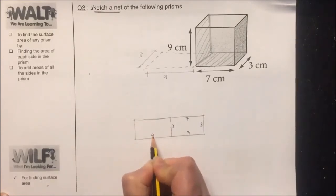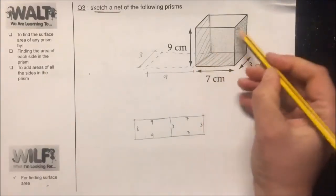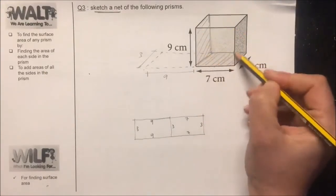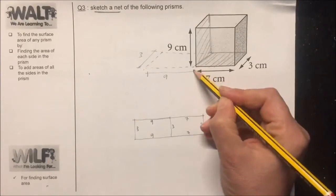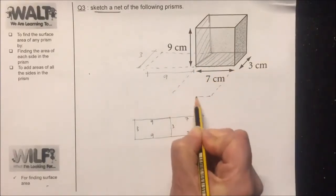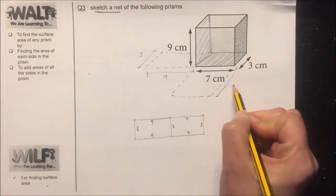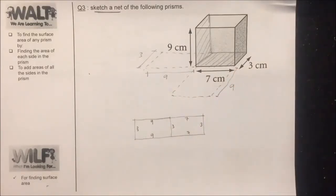So this is 9, this is 9, this is 3 as well, 3 and 3. Then I want you to imagine that this front face is falling on the floor as well like this. So this length here from here to here is the 9, right?